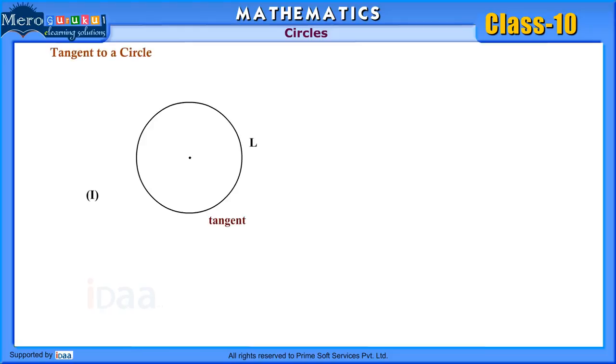Tangent to a circle. Look at the figure. The line L intersects the circle at two distinct points.